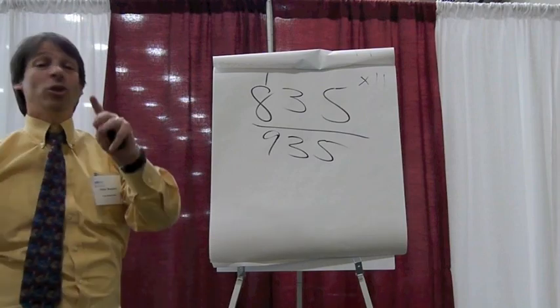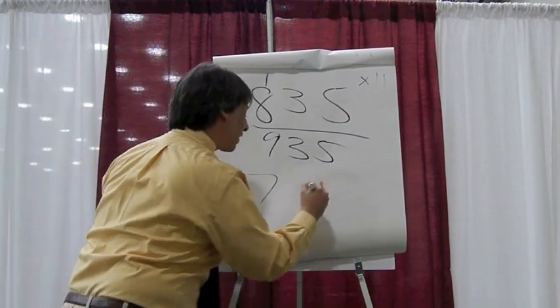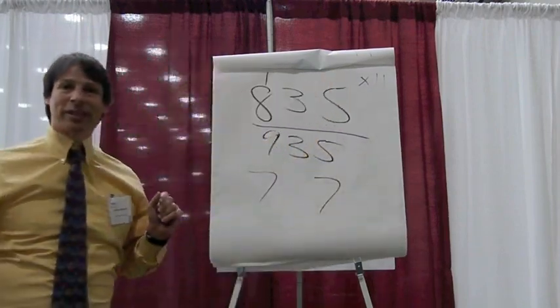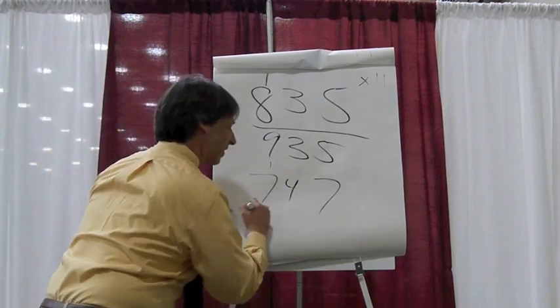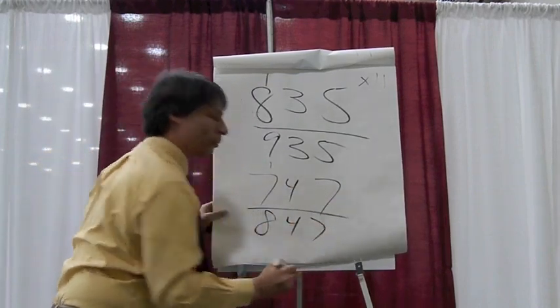Let's try one more. You try and multiply 77 times 11. 7 plus 7 is 14, so what's the answer? 847. Well done.